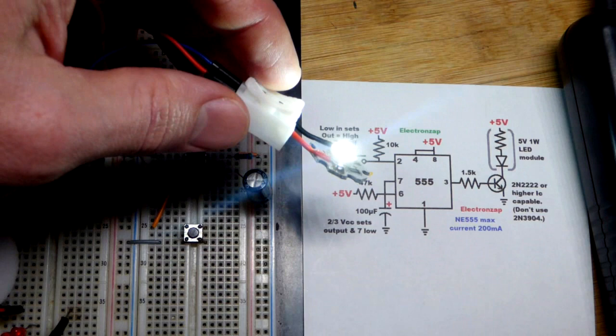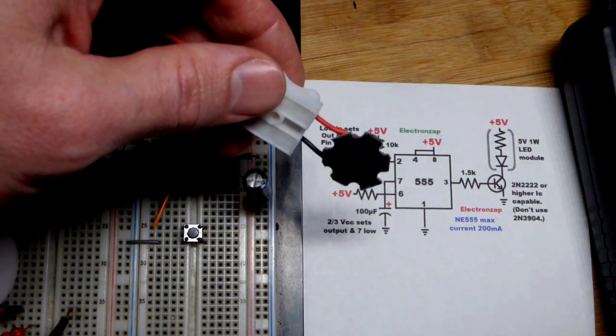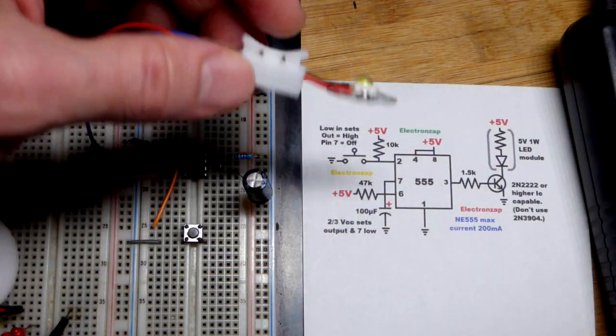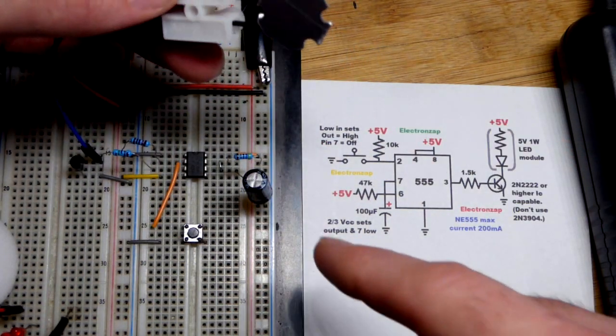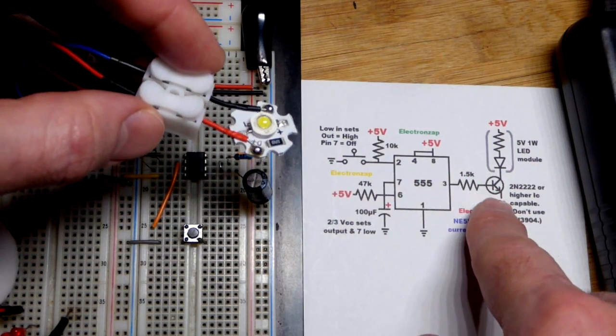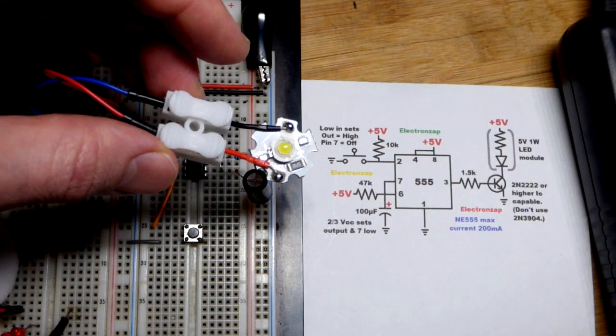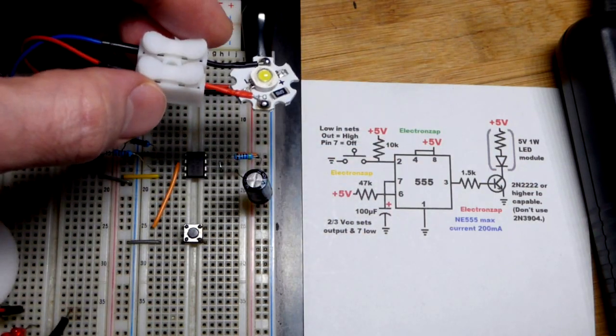The LED is going to be on for somewhere around 5 seconds it looks like when I press the button. Don't look at it directly if you have one of these, it's really bright. But I'm not turning it on and off directly with the 555 timer. I have an NPN bipolar junction transistor because this will let more current through it than what should go through the output of the 555 timer.